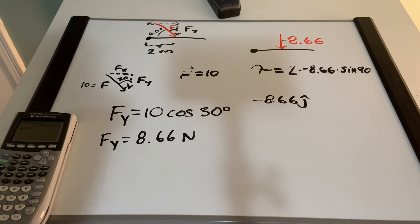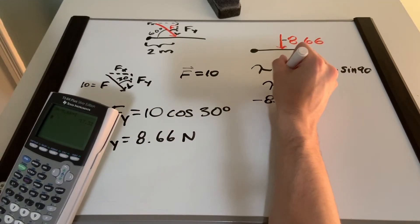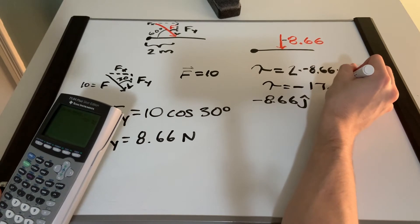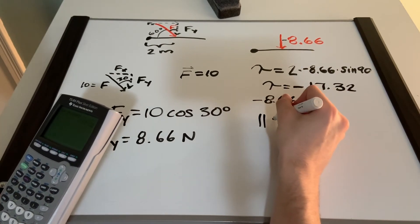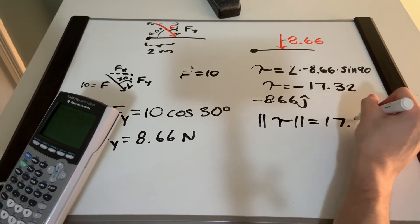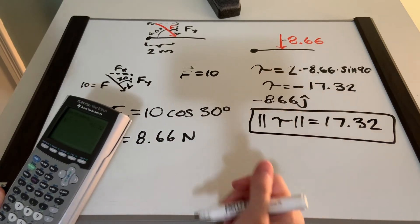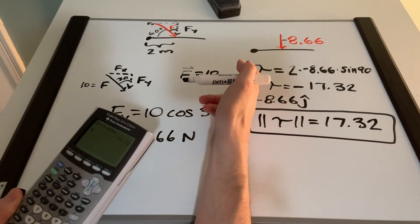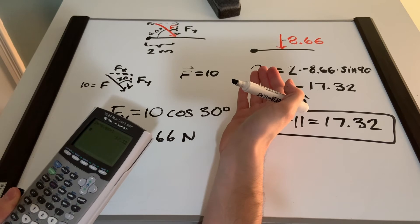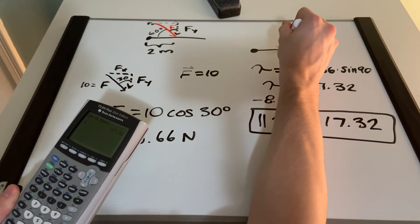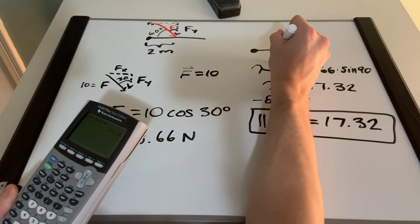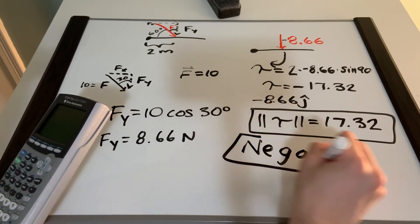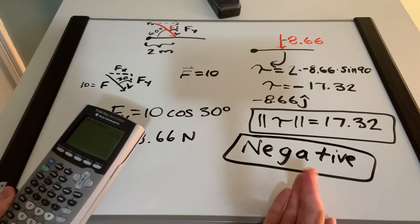Put that in the calculator and you should get a value of negative 17.32. But the question asks for the magnitude, so we're going to take the absolute value — that is the magnitude. All of the previous examples were positive, so we didn't have to worry about that, but they did ask for magnitude so we only want the positive value. The negative torque tells us we're going in the clockwise direction — we're going downwards, in the negative direction, which means into the page.